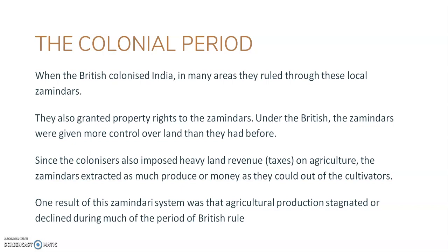The zamindars became very exploitative and the cultivators were very unhappy with the zamindari system. One key result was that agricultural production stagnated — it declined much during British rule, because the farmers did not have enough money or produce to pay both the fixed British tax and the additional surplus demanded by the zamindars. Agricultural production was no longer what it had been before.